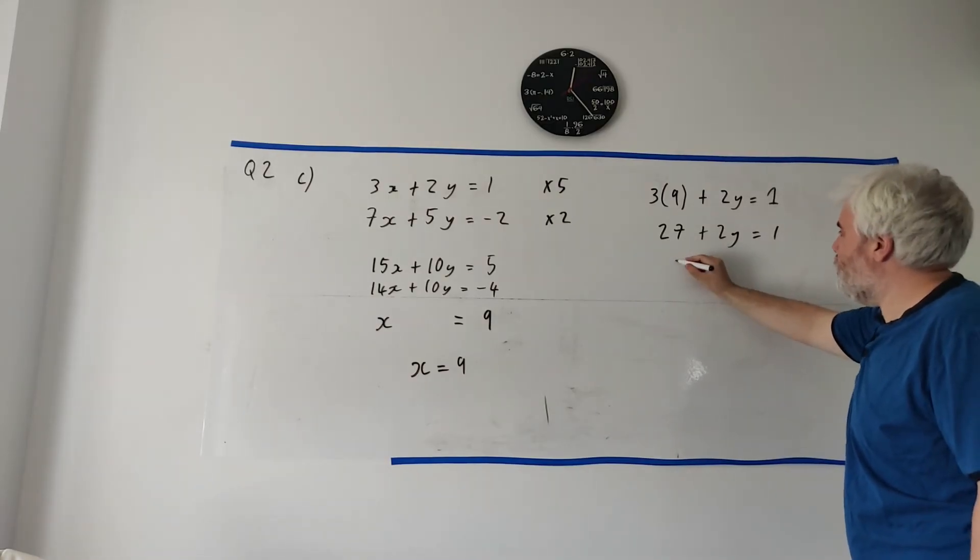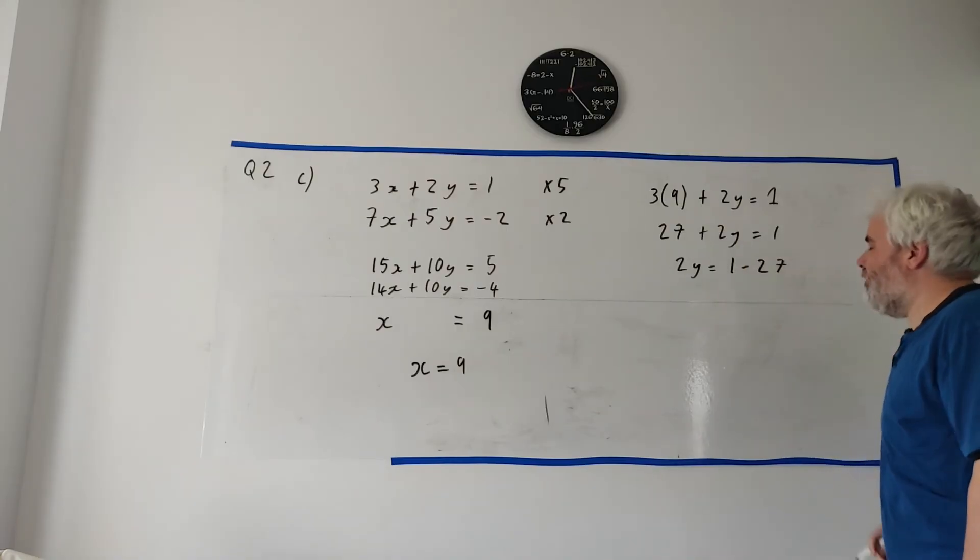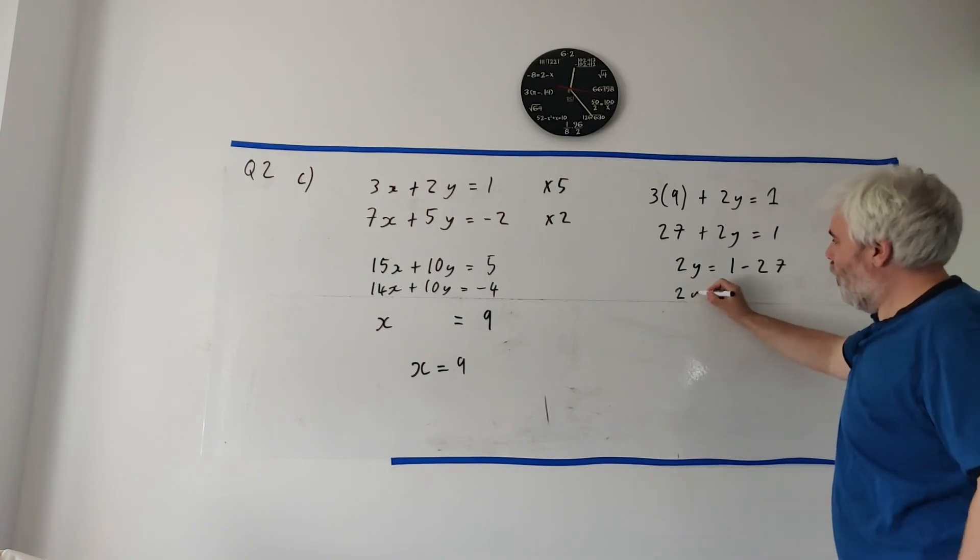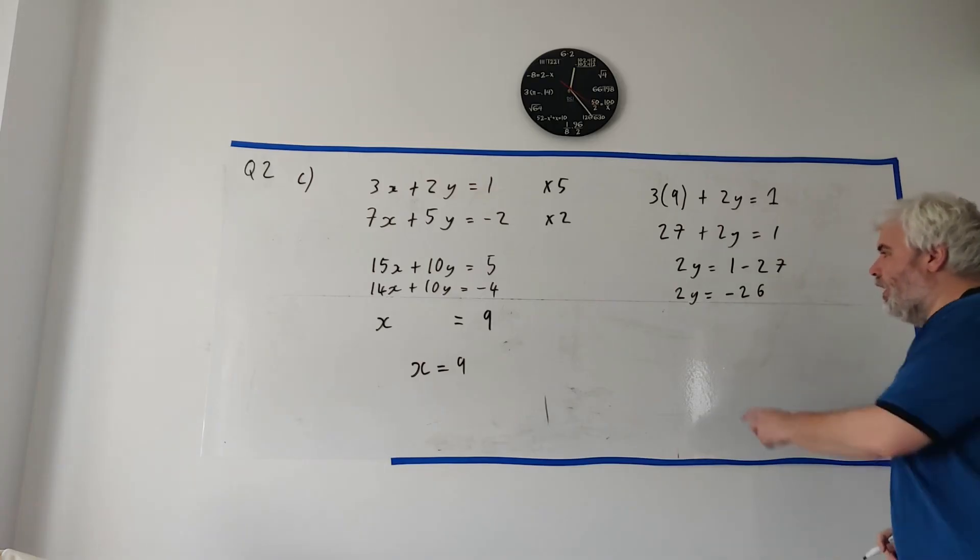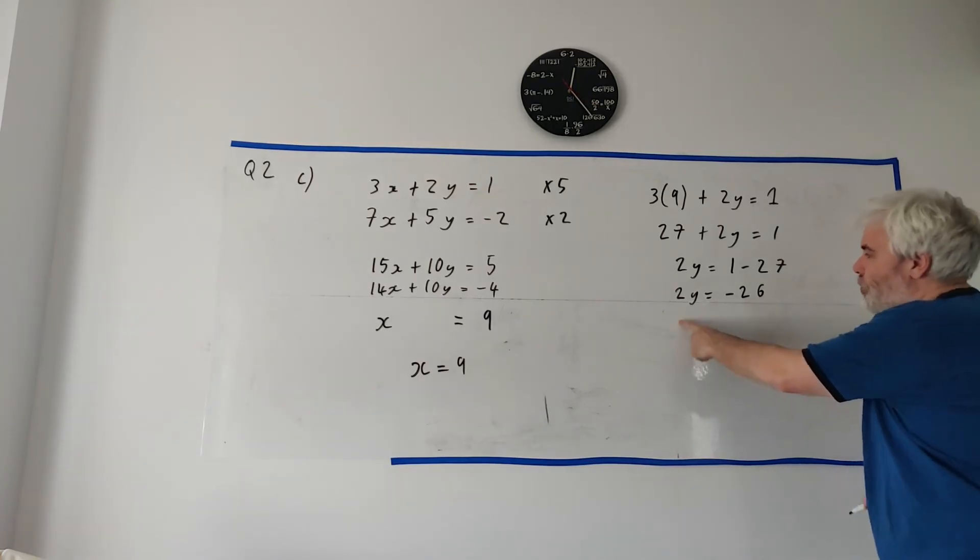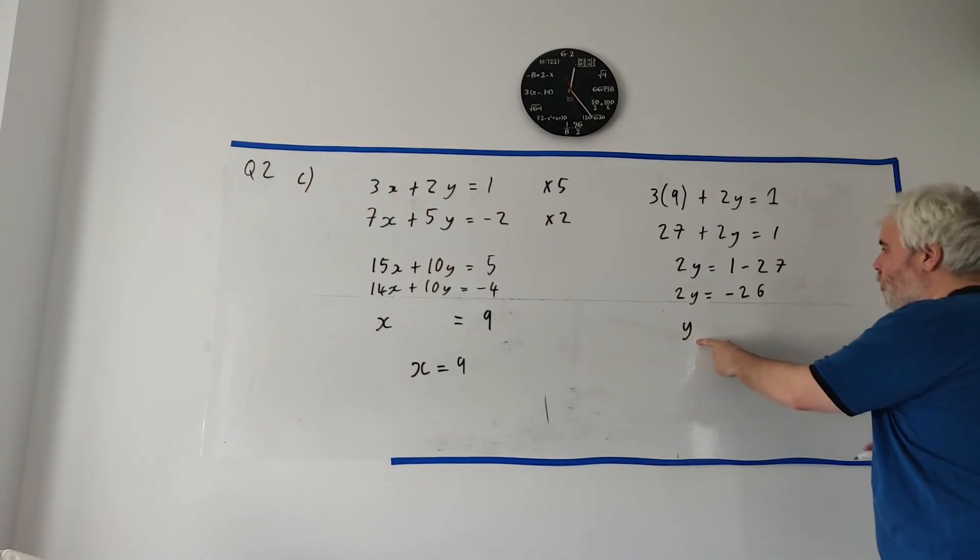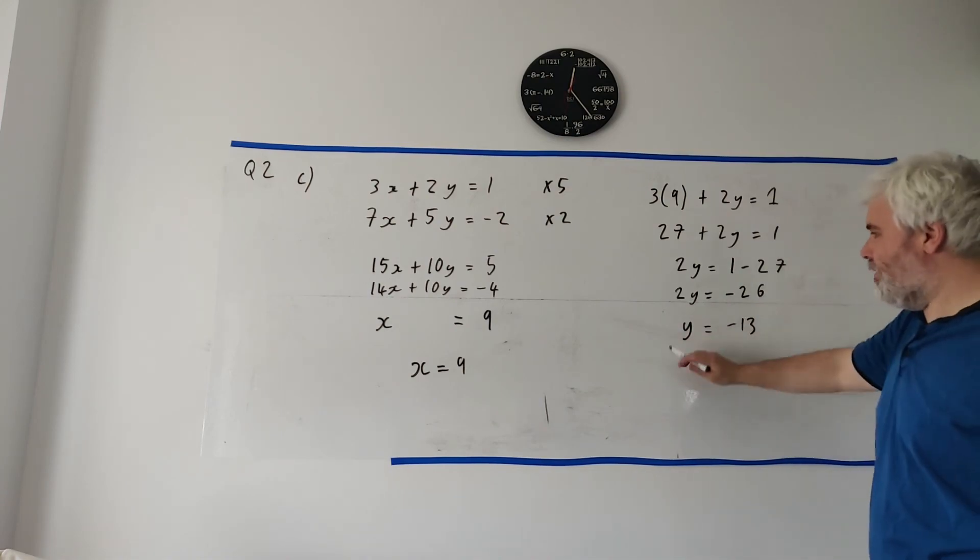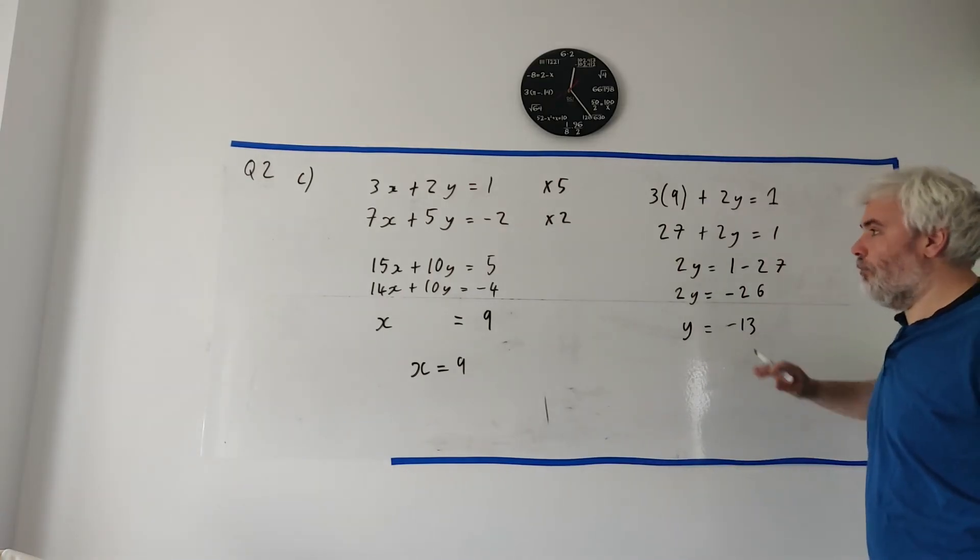3 9s is 27 plus 2Y is equal to 1. Take 27 from both sides. We have 2Y is equal to 1 minus 27. Oh, sorry. We can do this first. 2Y is equal to 1 minus 27 is minus 26. Divide both sides by 2. We get 2Y divided by 2 is Y. And 26 divided by 2 is 13. And there's still a minus. So there we go. There's our answer. X is equal to 9. And Y is equal to minus 13.